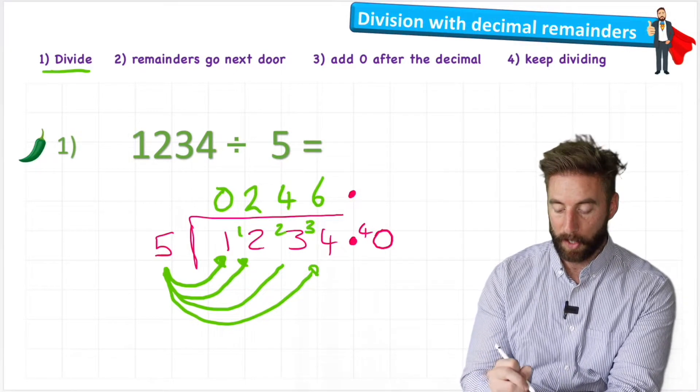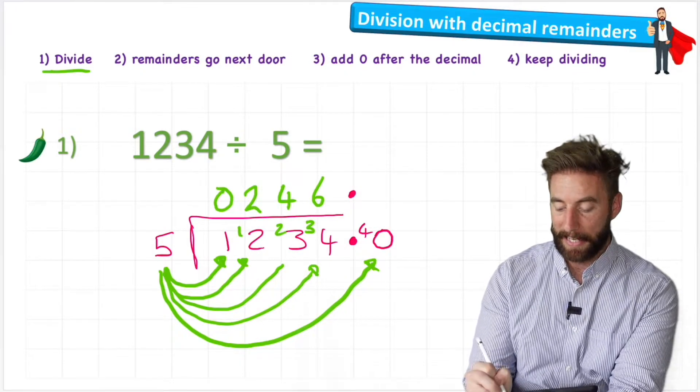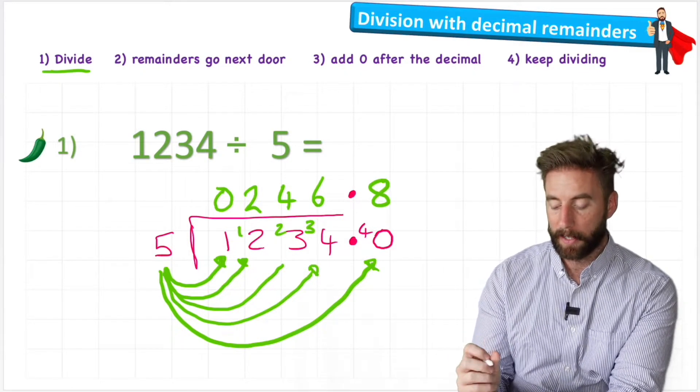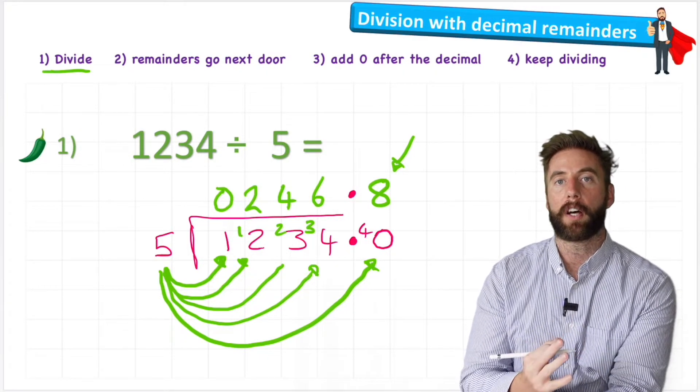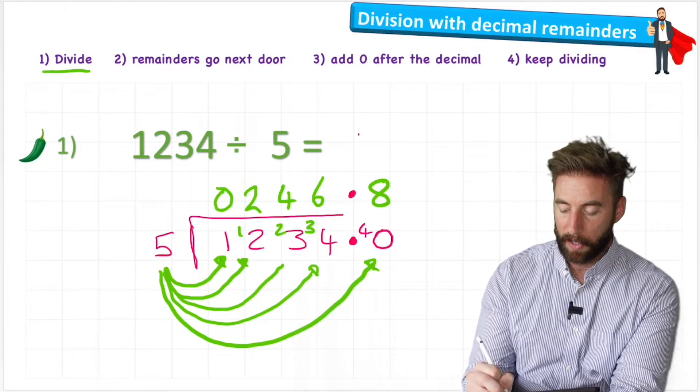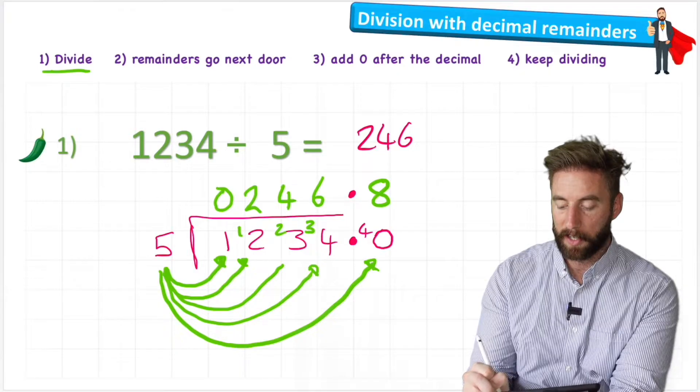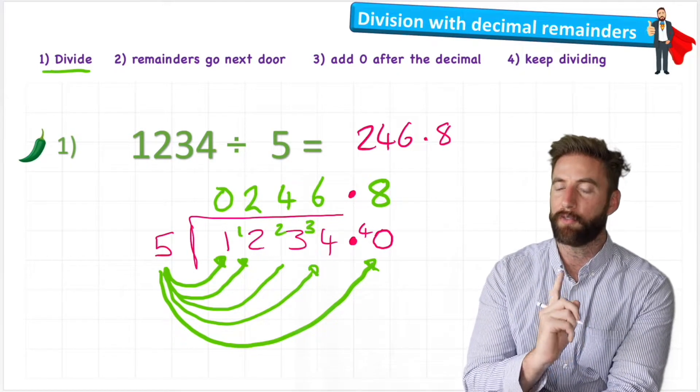And now my last question says, how many fives are there in 40? And there's eight. And now I have no remainders. And I finished with only one number after the decimal place. So we would call this answer to one decimal place. So my answer to 1234 divided by five is 246.8. Don't forget that decimal point, obviously, really important.